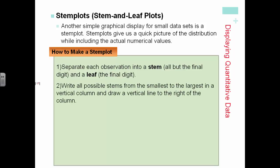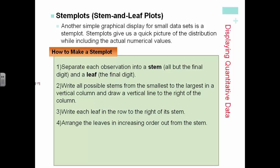We write all possible stems from smallest to largest in a vertical column and draw a line to the right of the column. Then we'll write each leaf in the row to the right of its stem. We arrange the leaves in increasing order out from the stem, and then provide a key that explains what the stems and leaves represent. Do not forget to provide a key that explains the context of the problem.